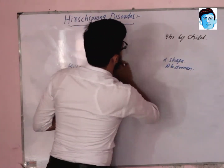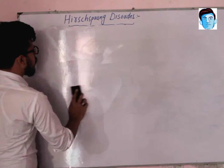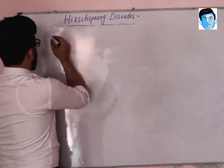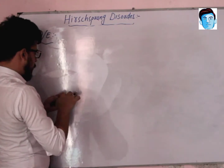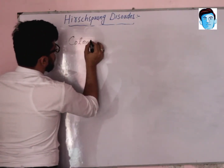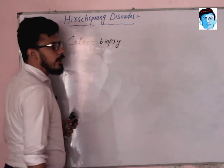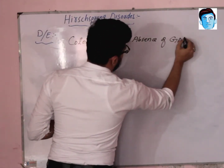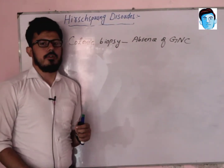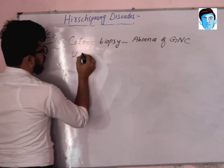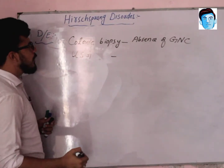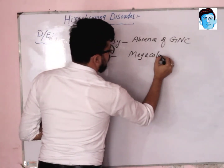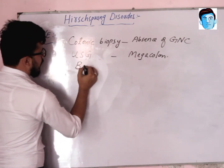For diagnostic evaluation of Hirschsprung disease, we perform colonic biopsy — biopsy of the large intestine — which will show us the absence of ganglionic nerve cells. We can also do ultrasonography, which will show us that the size of the colon is increased — a megacolon. There is also the option of barium enema.